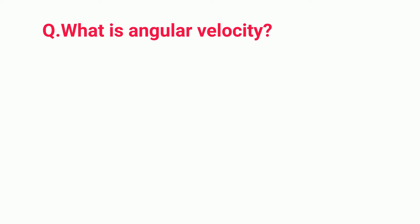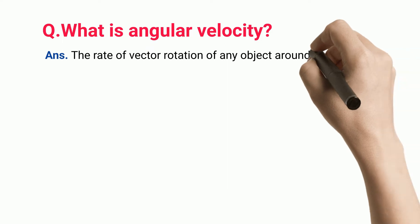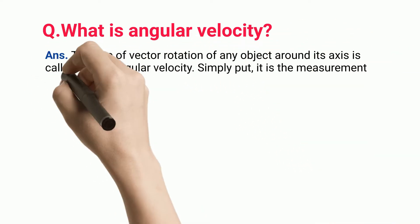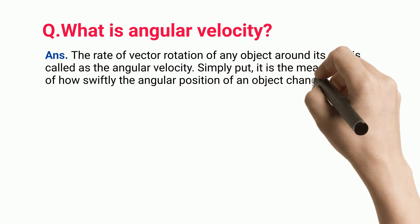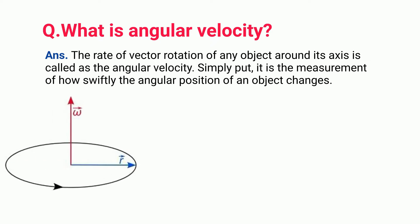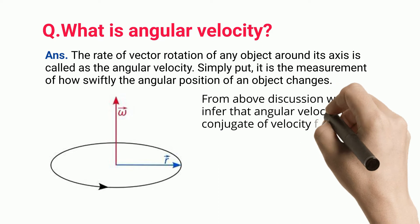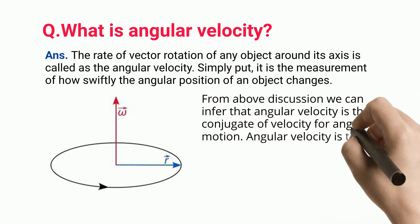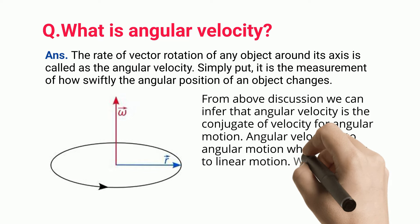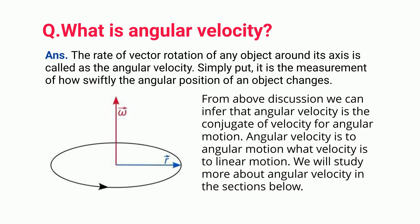What is angular velocity? The rate of vector rotation of any object around its axis is called angular velocity. Simply put, it is the measurement of how swiftly the angular position of an object changes. Angular velocity is the counterpart of velocity for angular motion — what velocity is to linear motion, angular velocity is to angular motion.